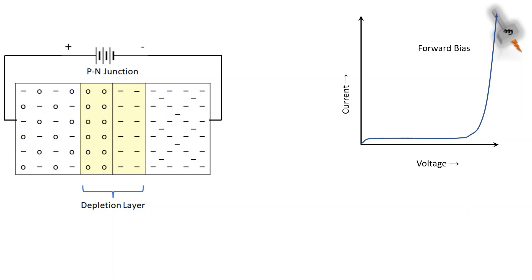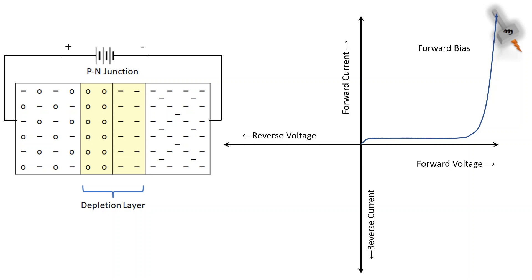Now let's see how the p-n junction will behave when the polarity is reversed. With the increase in reverse voltage, the current flow is again very less, and once the junction field is overcome by the external applied voltage, there is a rapid increase in current with a small change in applied voltage. This is called reverse bias.